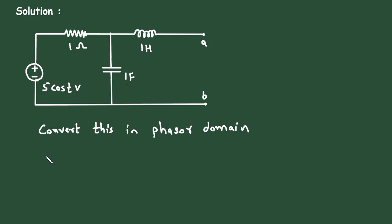So this 5 cos t will change to 5 at an angle 0 degree volts, and from this we can get the value of omega. So omega is equal to 1 radian per second.